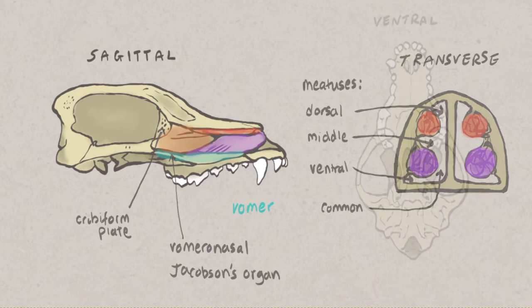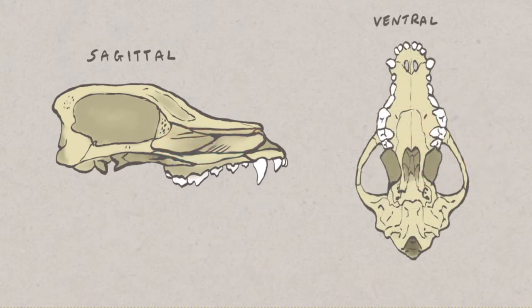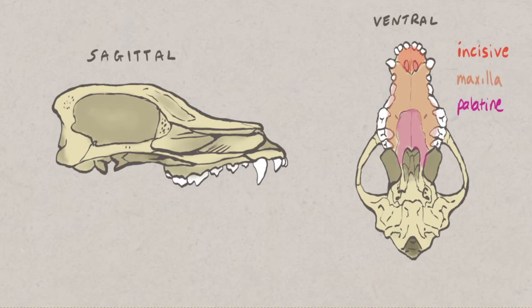Let's now look at a ventral view of the skull to get a better view of the hard palate. The hard palate forms the rostral roof of the oral cavity and separates the oral and nasal cavities at this point. The hard palate is formed by the fusion of the palatine processes of the incisive, maxillae and palatine, and it merges with the soft palate caudally.